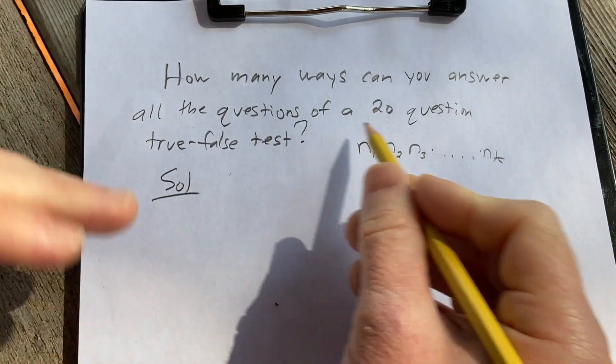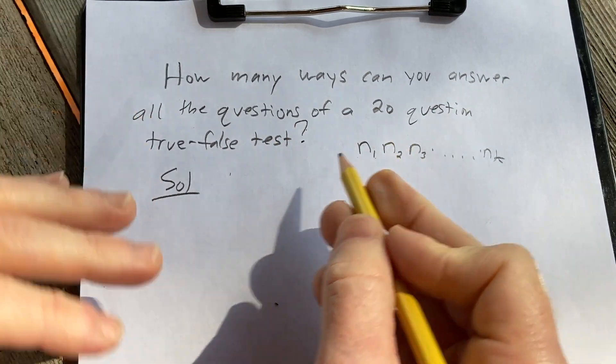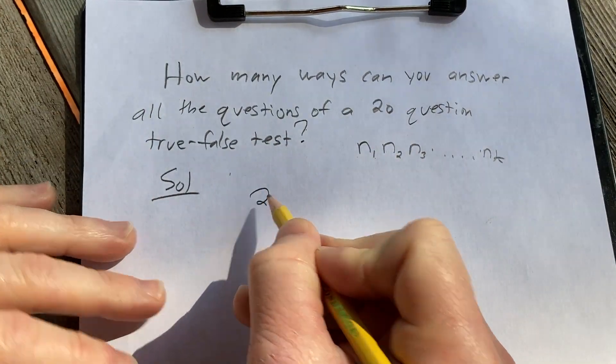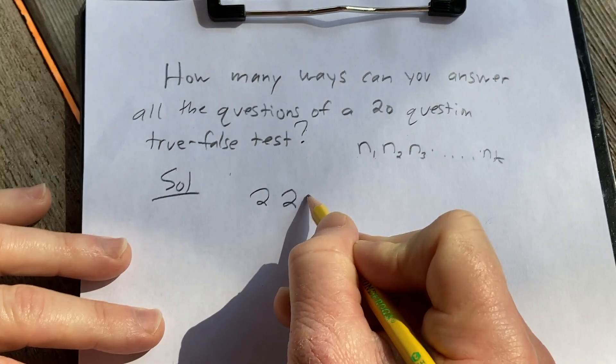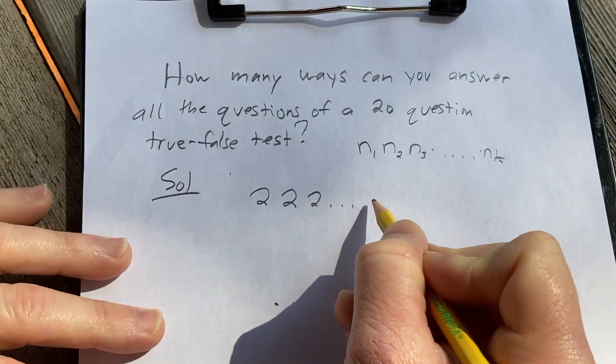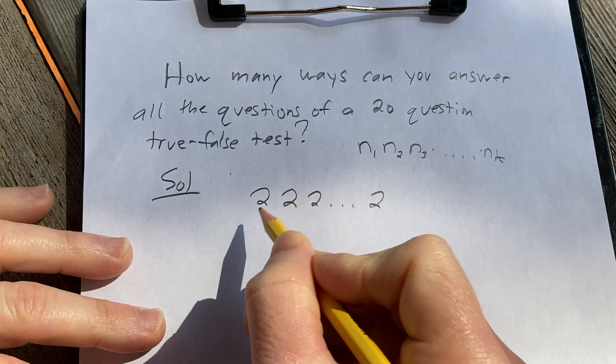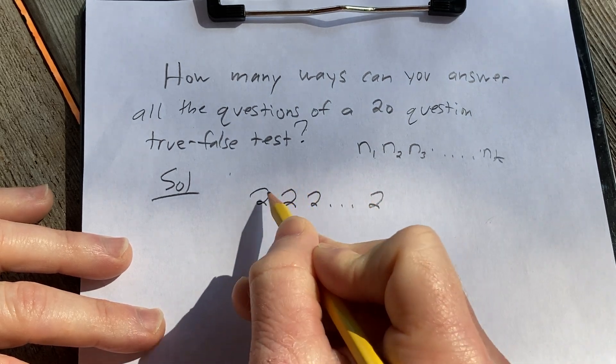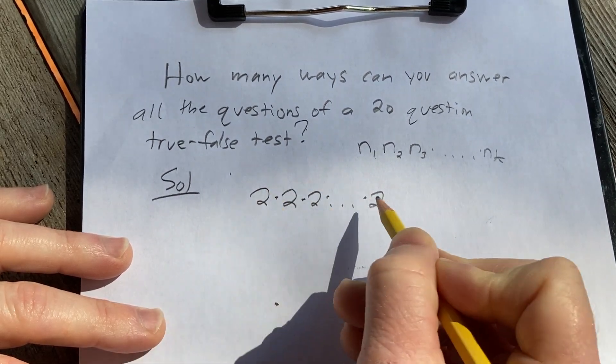So in this particular case we have 20 questions. There's two ways to answer the first question, and there's two ways to answer the second question, and two ways to answer the third question, etc., and two ways to answer the last question. By the multiplication rule, the answer is going to be the product of all of these ways.